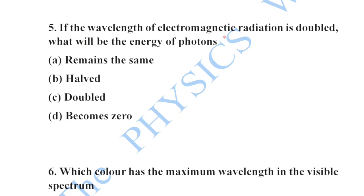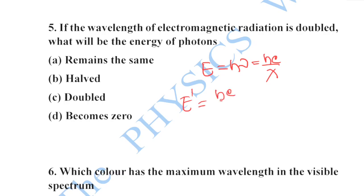Next: if the wavelength of electromagnetic radiation is doubled, what will be the energy of photons? The energy of a photon is E = hν = hc/λ. If wavelength is doubled, then E' = hc/2λ = E/2. So energy will be halved. Option B is your correct option.